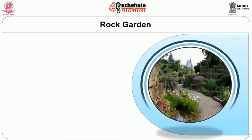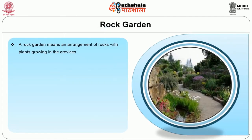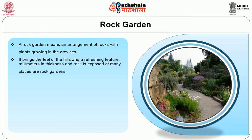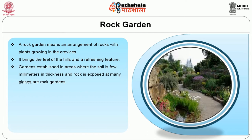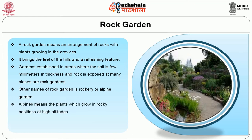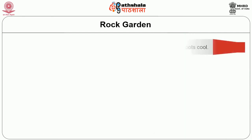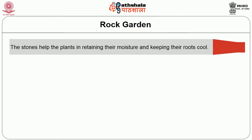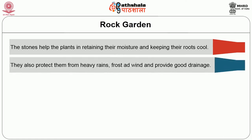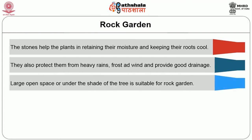Then the next element is rock garden. A rock garden means an arrangement of rocks with plants growing in the crevices. It brings a feel of hills and a refreshing feature. Gardens established in areas where the soil is a few millimetres in thickness and rock is exposed at many places are rock gardens. The other name of a rock garden is rockery or alpine garden. Alpine means plants which grow in rocky positions at high altitudes. Rocks, stones and borders are the main characteristic features of a rock garden. The stones help the plants in retaining moisture and keeping their roots cool.